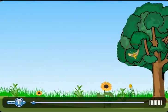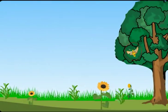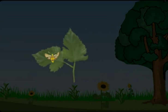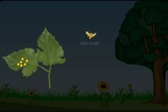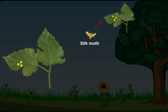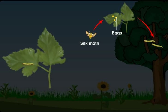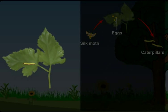I'm sure you all know about silkworms. The life of a silkworm starts when a female moth lays eggs on mulberry leaves. After some time, these eggs hatch into larvae. These larvae are known as caterpillars or silkworms. Slowly, these caterpillars grow in size by feeding only on the mulberry leaves.